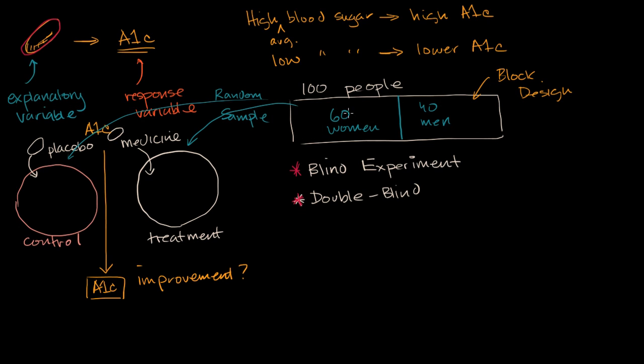we did what we call a block design, where we took our 100 people, and we just happened to have 60 women and 40 men, and we said, okay, well, let's split the 60 women randomly between the two groups, and let's split the 40 men between these two groups, so that we have at least an even distribution with respect to sex.